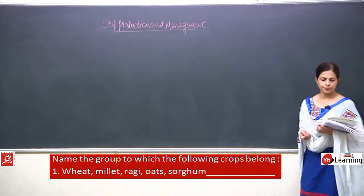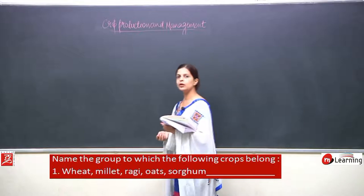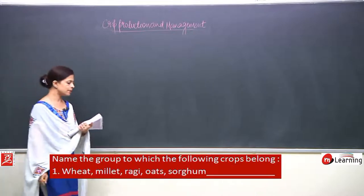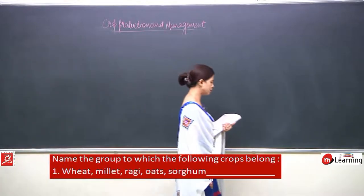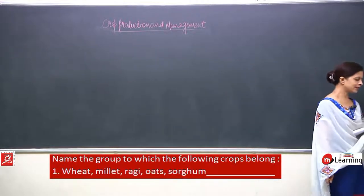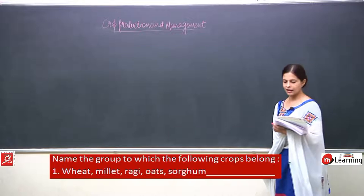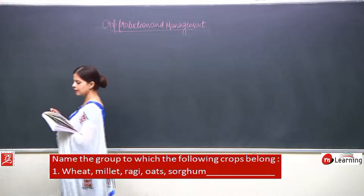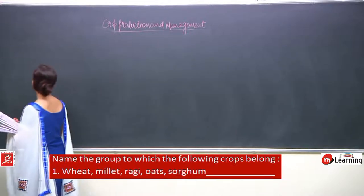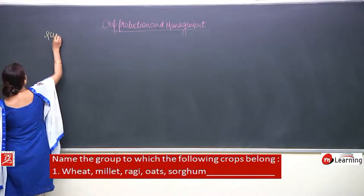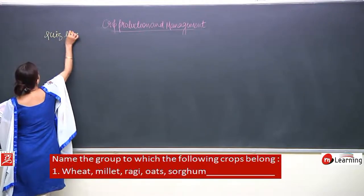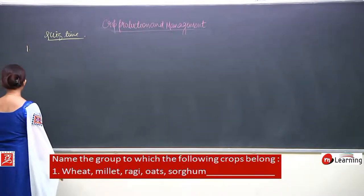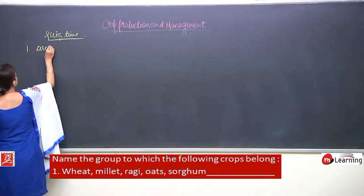First question: name the groups to which the following crops belong. First group is wheat, millet, ragi and oats. You all know these are cereals.